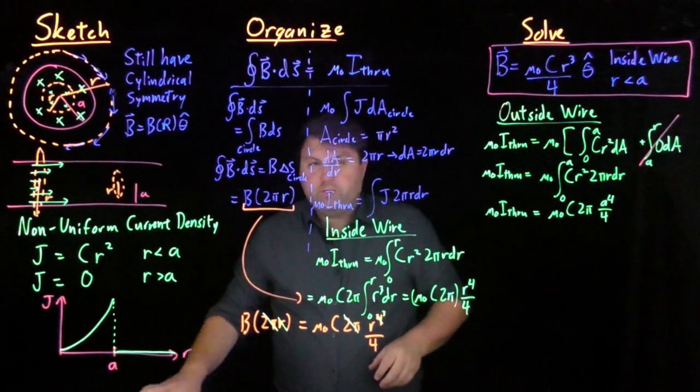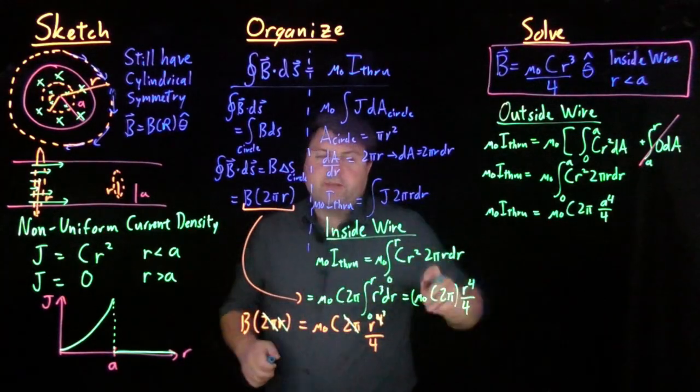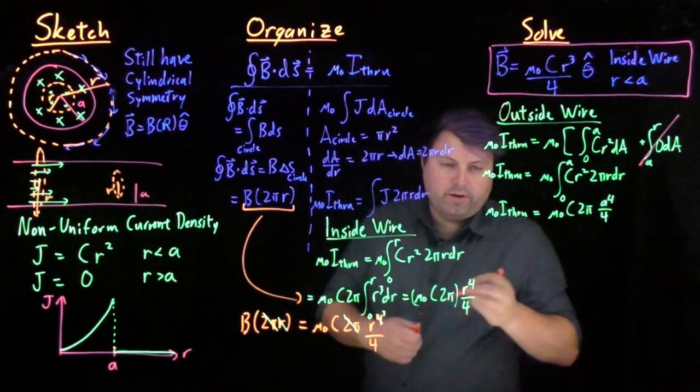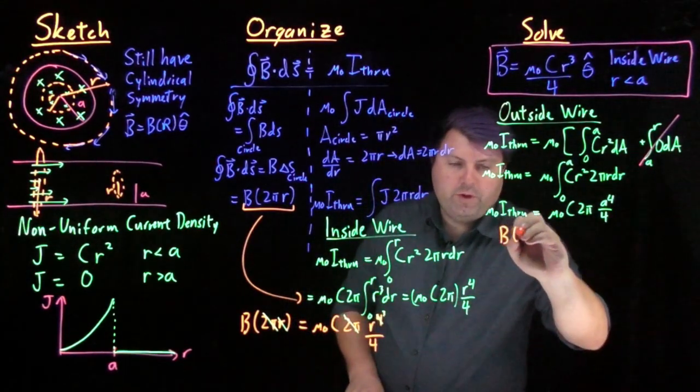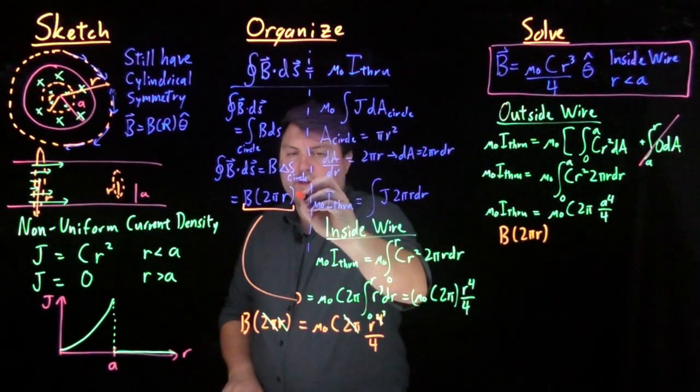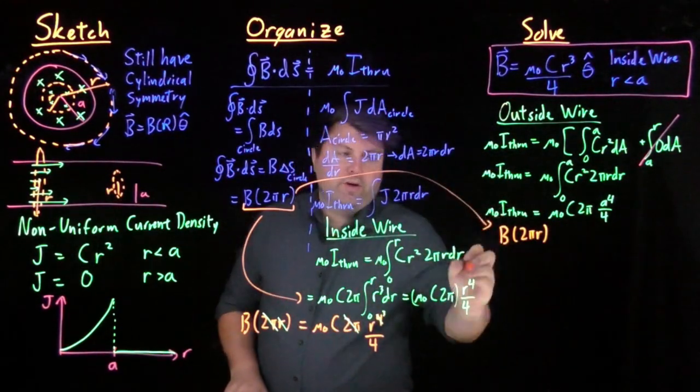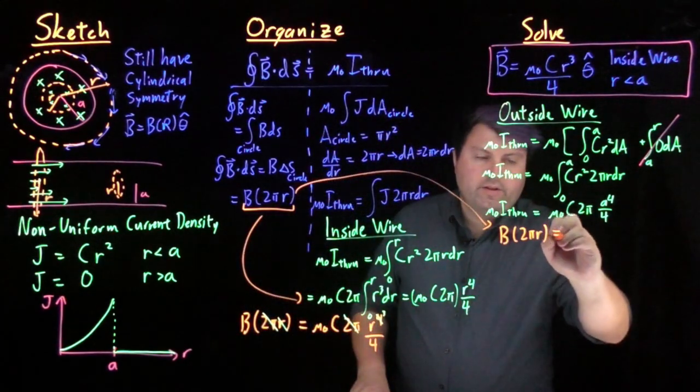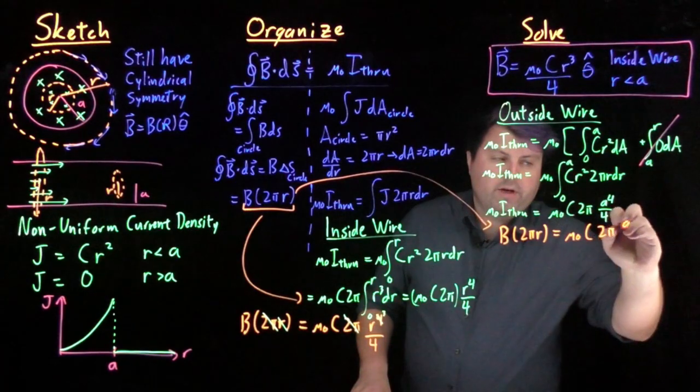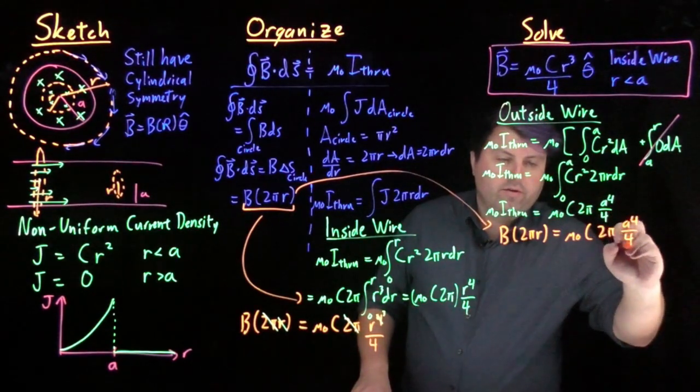So we have our mu naught i through is mu naught c 2 pi a to the 4th over 4. And we know that our mu naught i through is equal to b times 2 pi r. So we have over here, b times 2 pi r. We're now going to take this, bring it over here, and this is equal to mu naught c times 2 pi a to the 4th over 4.